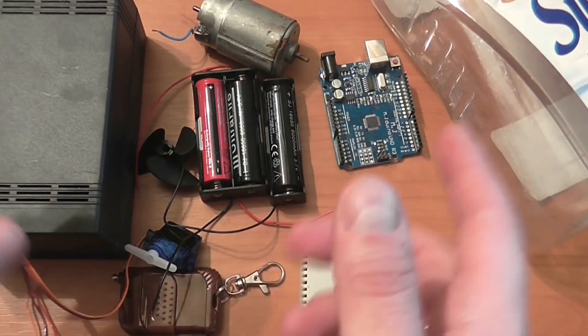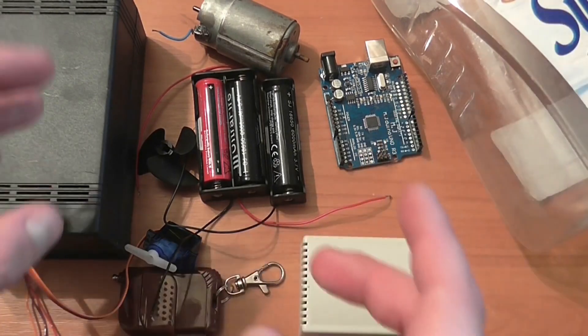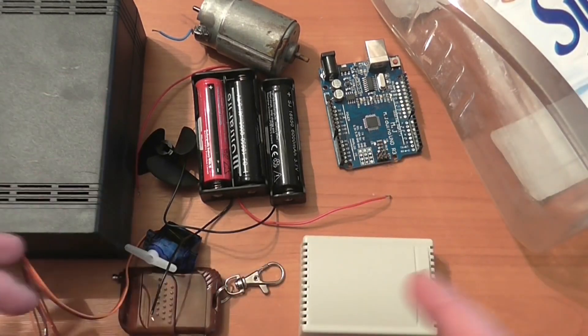Hi everybody! Today I will show you how to make a cheap and simple radio control boat with a remote range up to 300 meters.